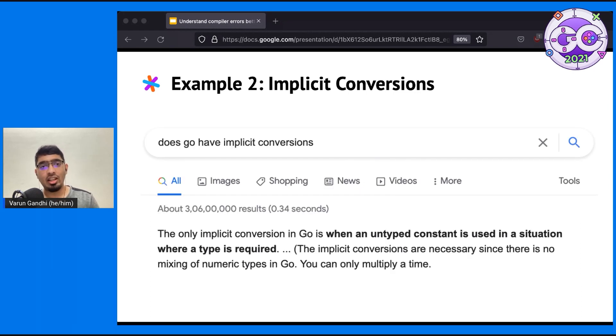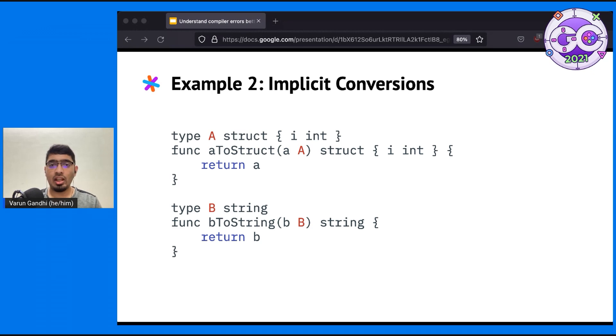If you ask the circuit change engine, it might give you a confident result saying that Go doesn't really have implicit conversions. Again, this is an example where consulting the specification is valuable. Let's consider some code as shown here. I have two custom types, A and B, which are wrappers over a struct and string, respectively. I take a value of the custom type and try to return it as a different type, first for A and then for B. Take 10 seconds. Which of these do you think will work?